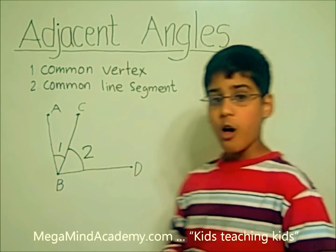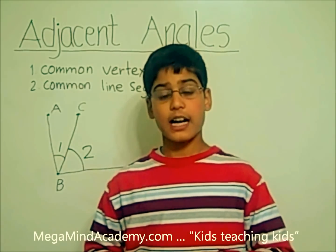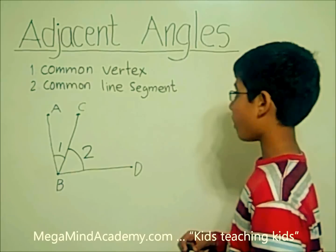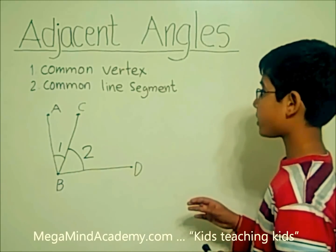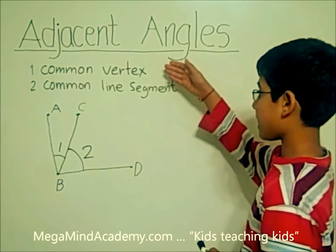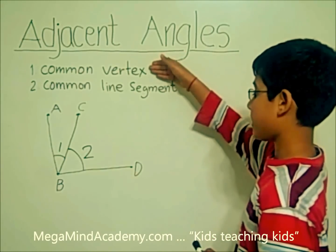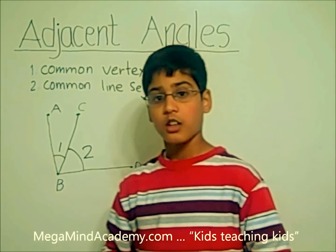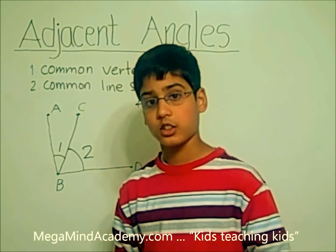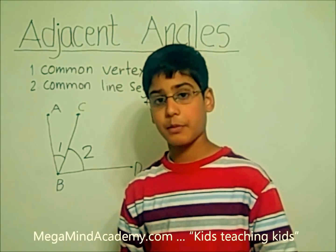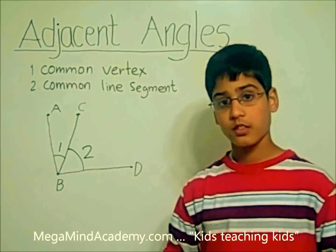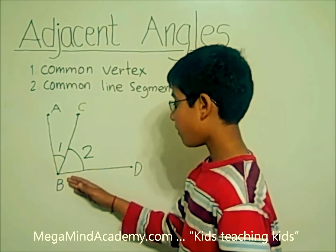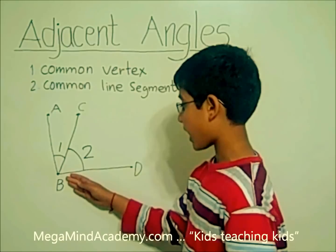Now, let's find out if they are adjacent angles. The first property of adjacent angles is that they have a common vertex. So, does angle 1 and angle 2 have a common vertex? Yes, they do. It is vertex B. Vertex B is the common vertex.